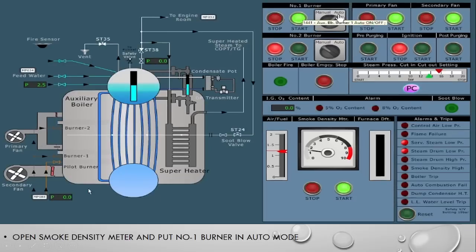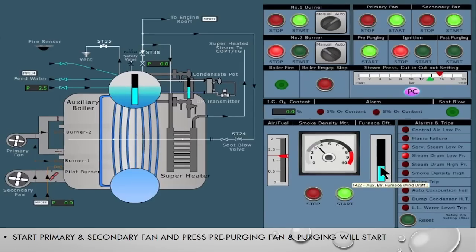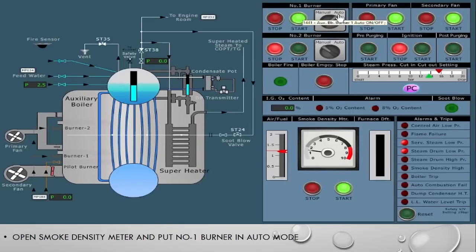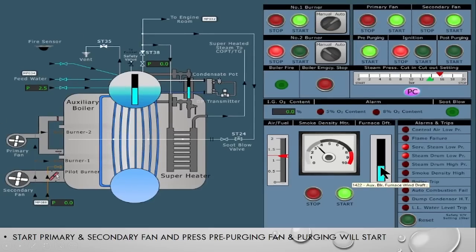Now we will start the boiler. First we open the smoke density meter and put number one burner in auto. We are firing number one burner only, as most ships have only one burner and one pilot burner. After starting the smoke density meter and putting number one burner in auto, the primary fan and secondary fan will start. As the fans start, the boiler begins pre-purging. You can see the draft fan valve is almost 60 percent open and slowly increasing — more air is being sent inside the boiler.